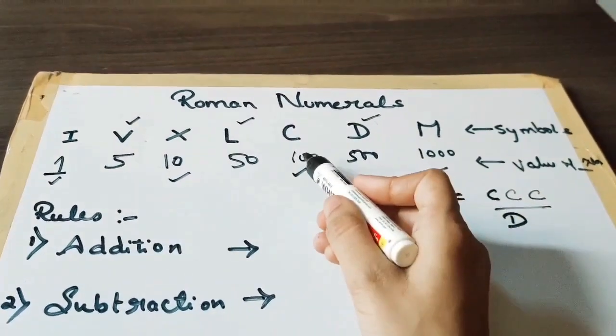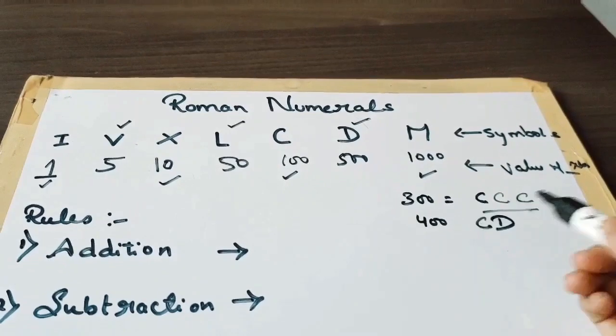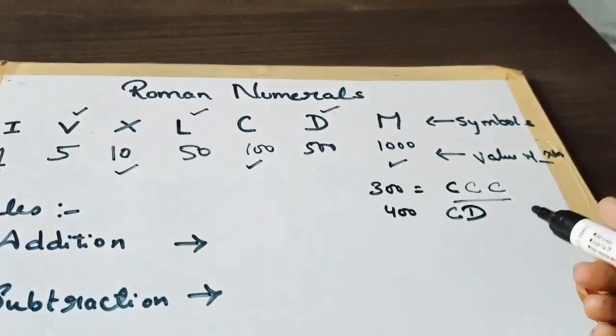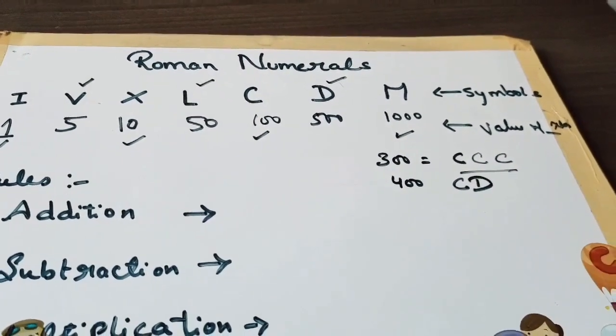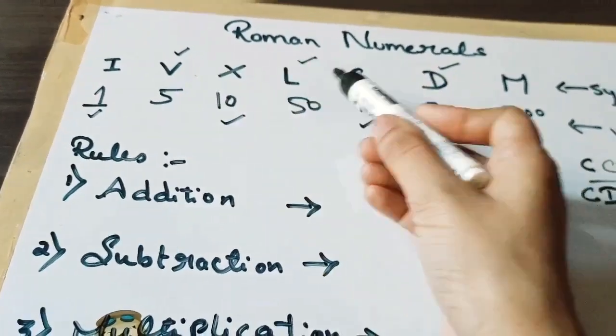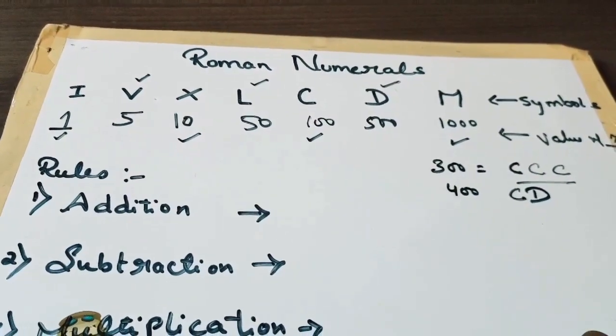But if we have to write the number 400, we will use D and write C before this. If we write the smaller number on the left side, then it means subtraction. So just understand that V, L, and D never be repeated.